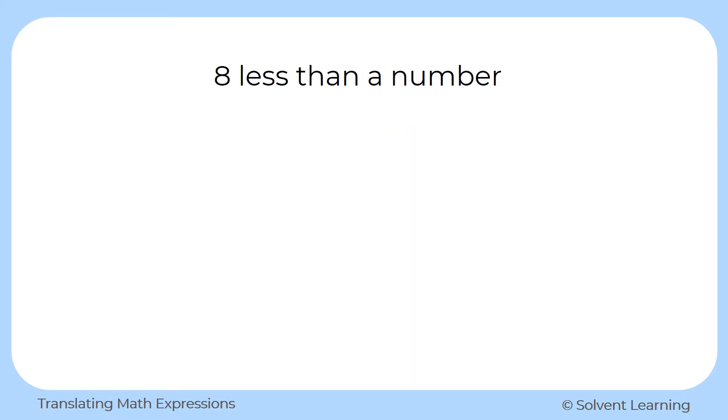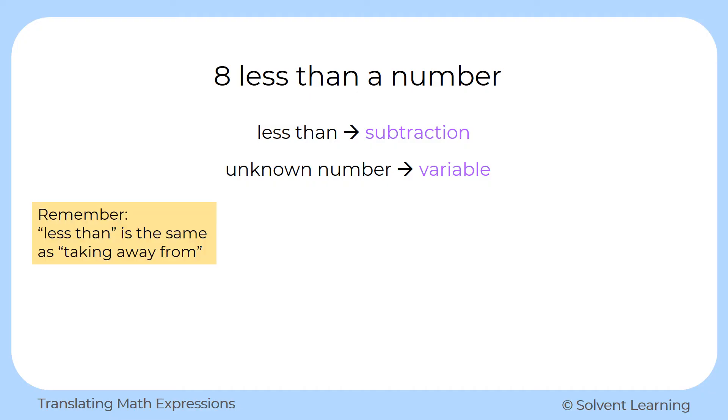Next, we have eight less than a number. Less than refers to subtraction. So we know we have some subtraction involving that number eight, and also some unknown number, which we will represent with a variable. Now remember, less than is the same as taking away from something. So if we have eight less than a number, then we're starting with some number and taking eight away from it. So we'll represent that as n, or whatever variable you'd like to use, minus eight to show that we're taking eight away from that number.